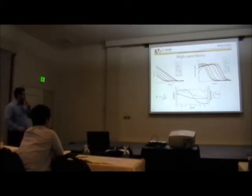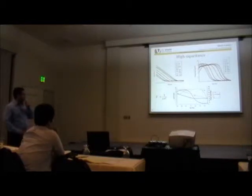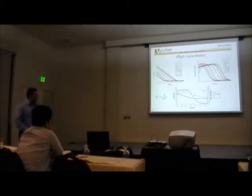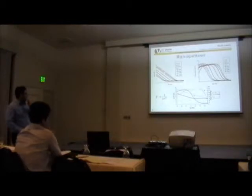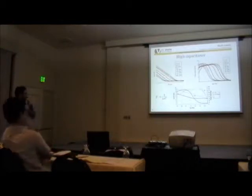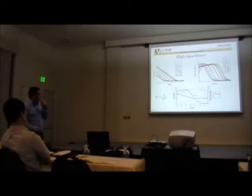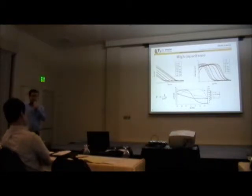These two are both Bode plots. On the left side, we see the log of impedance versus log of frequency. On the right side, we see phase angle versus log of frequency. The red ones correspond to control samples and the black ones correspond to 4, 8, 16, and 32 minutes of electro-deposited film.